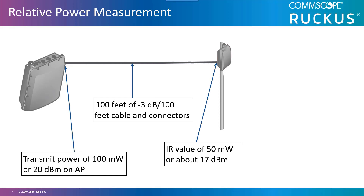There's equipment that you can attach to the ends of cables to actually measure the true amount of intentionally radiated power the system is transferring to the antenna. A measurement taken at the end of the cable which connects to the antenna can be expressed in an absolute value — in this case it is 50 milliwatts or 17 dBm. This location is where the intentionally radiated power, or IR, is measured, and it is one of the locations regulated by governments around the world for how much power you can purposely put into an antenna.